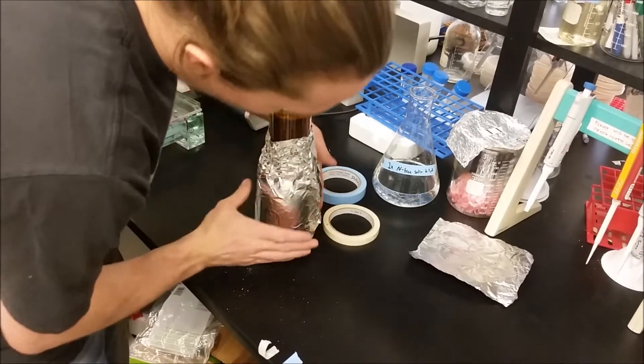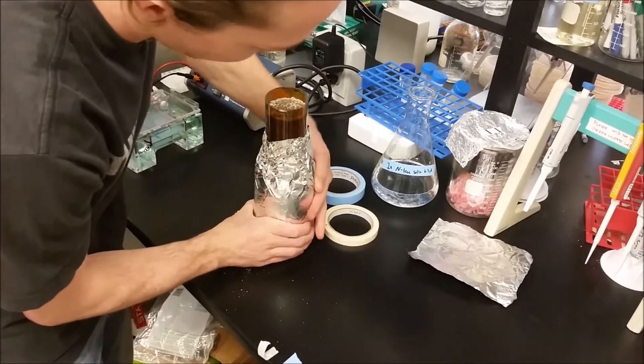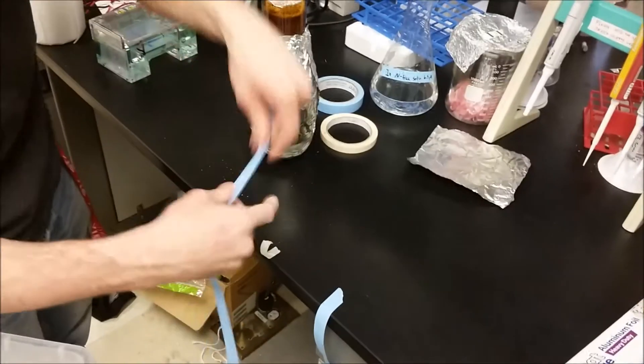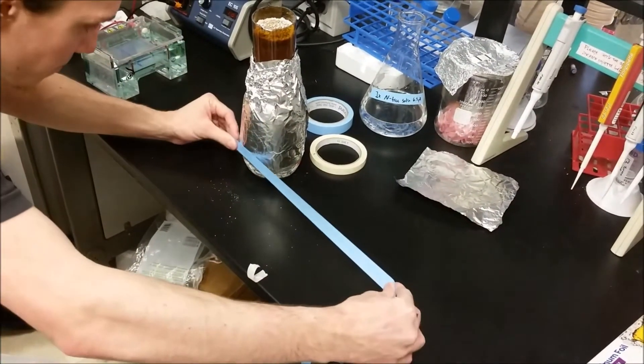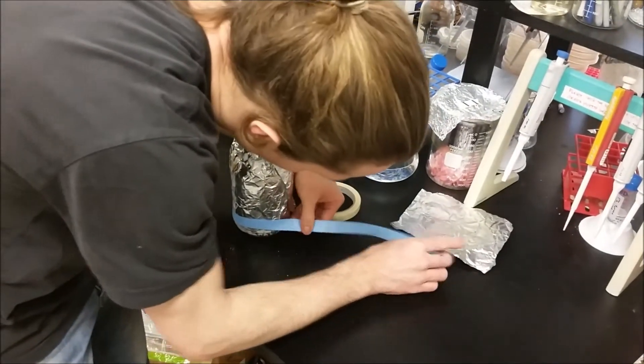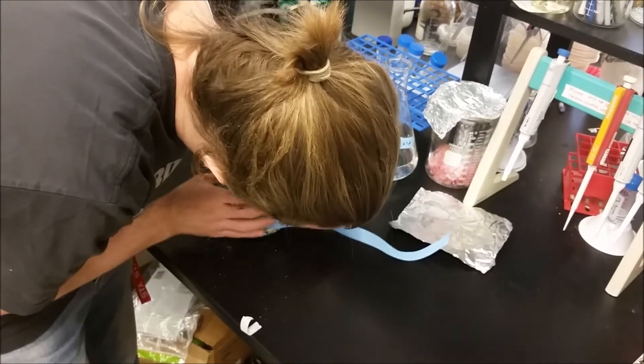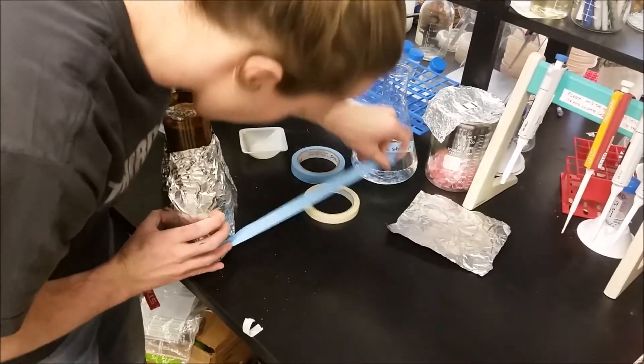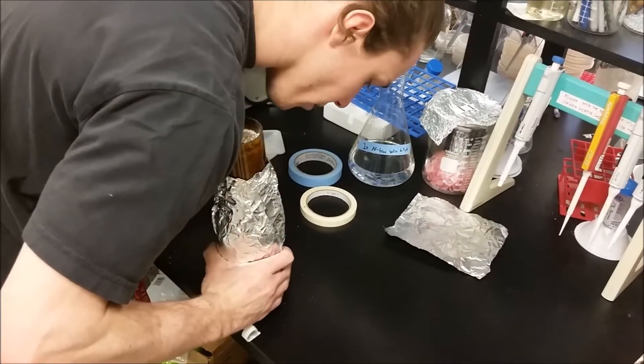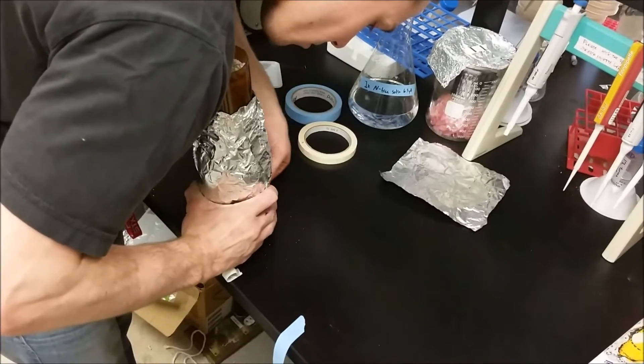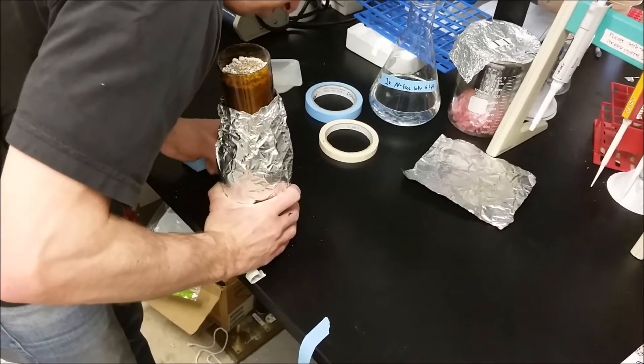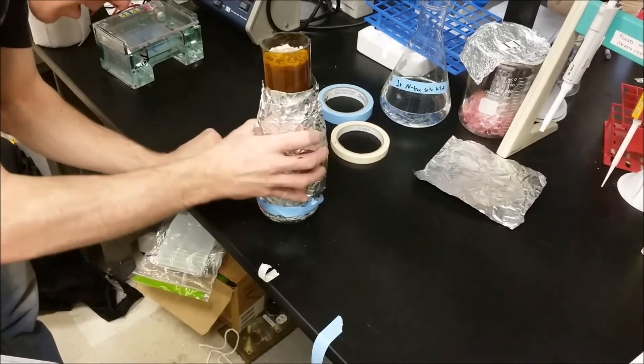Now the next step is we're going to add some tape to keep this foil down. I'm going to take a long piece of tape here and wrap it around the bottom to keep our foil connected to the jar. Just going to get it all the way around, just like that.